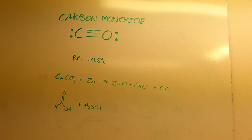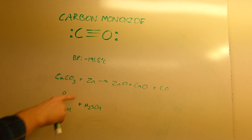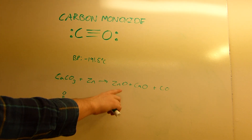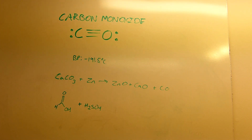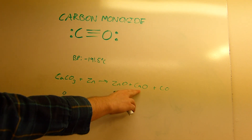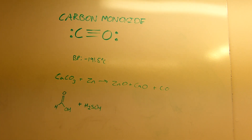It's made in the laboratory using several different ways. You can react calcium carbonate with zinc powder as an intimate mixture, which is strongly heated, and you end up with zinc oxide, calcium oxide, and carbon monoxide. This method works, but it requires strong heating of highly basic oxides in the presence of glass, which tends to destroy glassware. So I don't prefer that method.